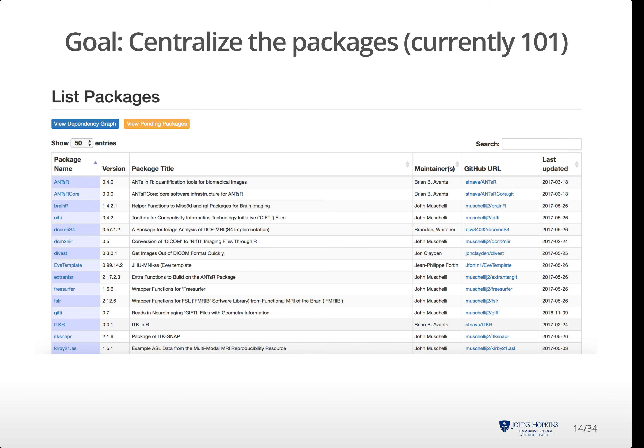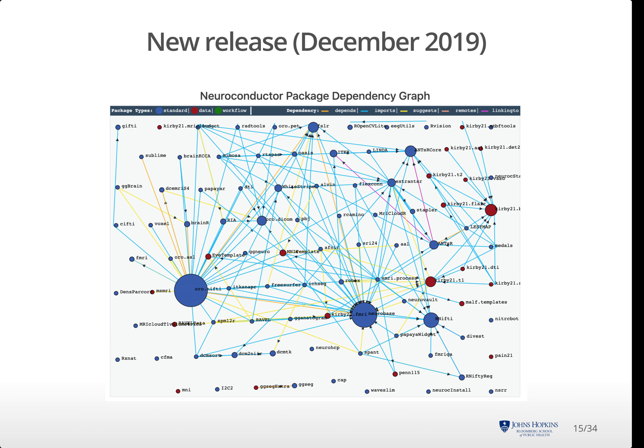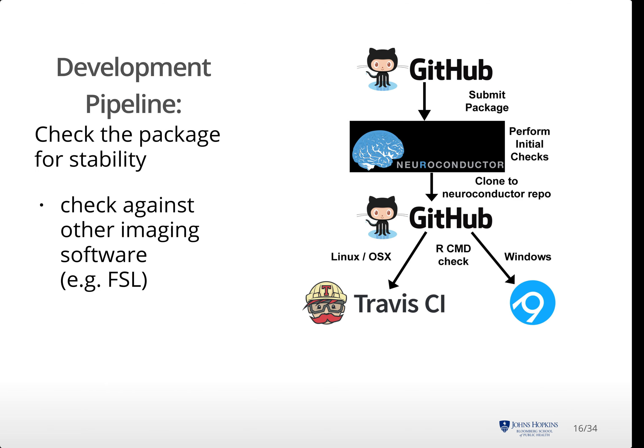As one of our goals is centralization, we list some of the packages here. If you go on the NeuroConductor website, you will see a full listing. Although we use GitHub and online systems for checking, we create releases where all the packages are sufficiently checked against each other. Here we show a dependency graph of the packages in the last release, indicating how connected the system is. You'll see different colors for standard packages and data packages. The NeuroConductor platform is built on GitHub and cloud continuous integration services, checking packages for stability and consistency on Travis CI for Linux and Mac OS X, and AppVeyor for Windows.